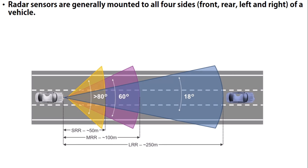To recap, the three types of radar are: SRR with a range of 50 meters and a width of 80 degrees; MRR with a range of 100 meters and a width of 60 degrees; and LRR, which identifies safety distance up to 250 meters but with a narrow width of about 18 degrees.